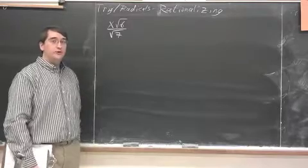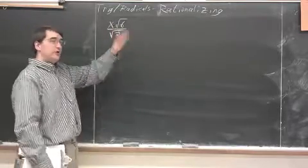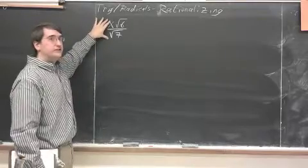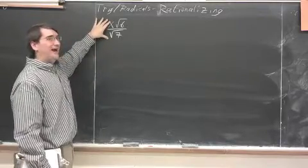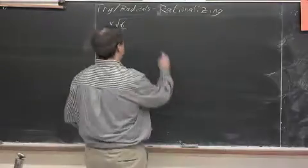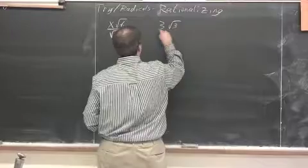If you watched the first video already, then you've already observed how, or we noted at the end of the video, how this is not technically done. We need to do something called rationalizing to it. We'll do a simpler example first, just something like 3 root 3, 3 radical 3 over radical 2.